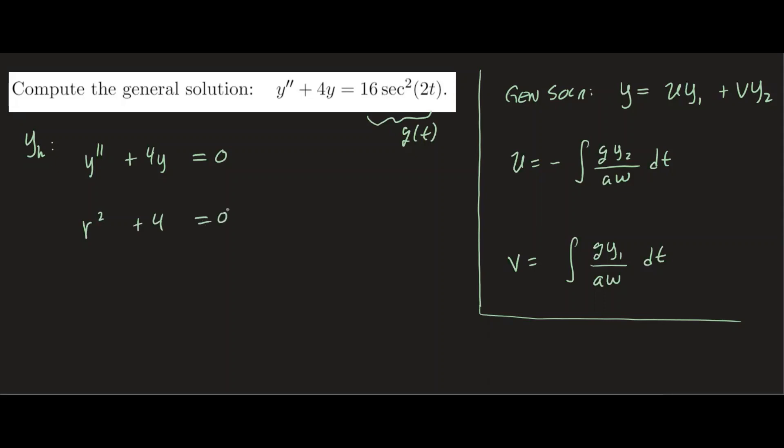And if you subtract 4 and then take the square root, you get r equals plus and minus 2i. So we have an imaginary root to this polynomial. So our solution to the homogeneous is going to be cosine and sine.